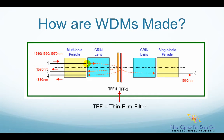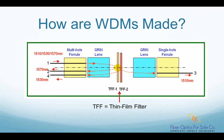If used in the reverse direction, it can also combine different colored lights from individual fibers into a single fiber. As shown, three colored lights — 1510 nanometer, 1530 nanometer, and 1570 nanometer — come from a single strand of fiber. The green lens collimates the light so it won't diverge into a large uncontrolled beam. Filter one is designed to pass 1530 nanometer and 1510 nanometer but reflect 1570 nanometer.